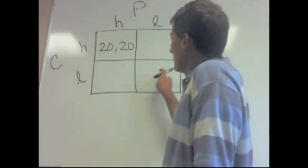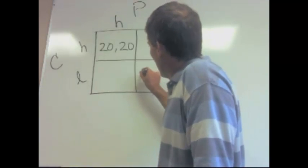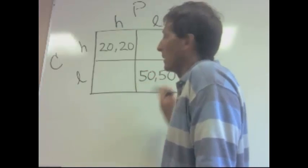If both companies go low and they kind of save their money on advertising, then Coke will make $50 million and Pepsi will make $50 million.